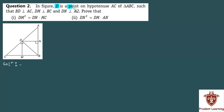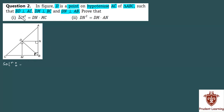In the figure, D is a point on hypotenuse AC of triangle ABC such that BD is perpendicular to AC, DM is perpendicular to BC, and DN is perpendicular to AB. Since AC is the hypotenuse, the opposite angle is 90 degrees, making triangle ABC a right triangle. We are also given that BD is perpendicular to AC, DM is perpendicular to BC, and DN is perpendicular to AB.